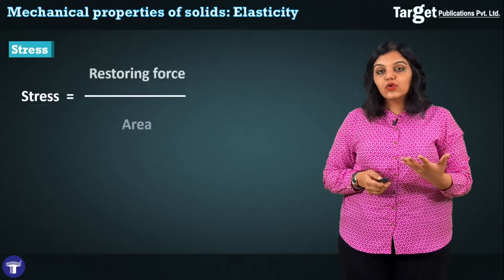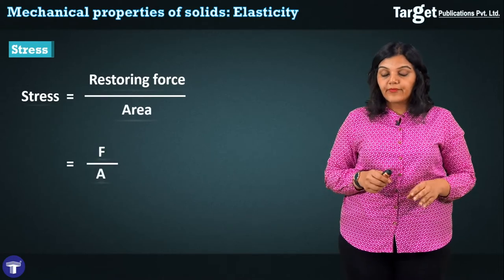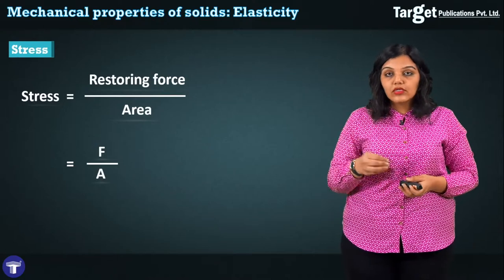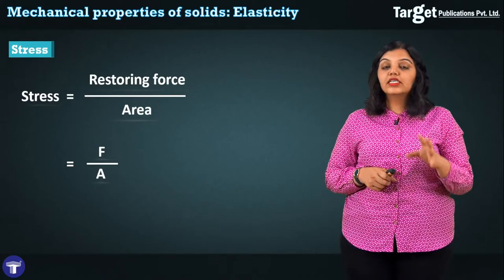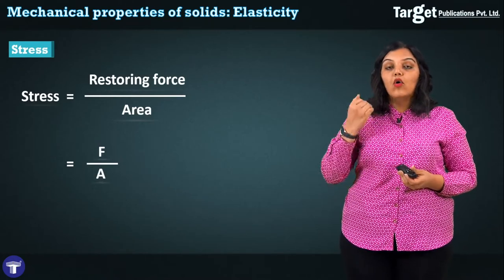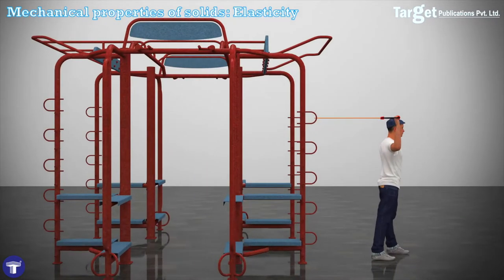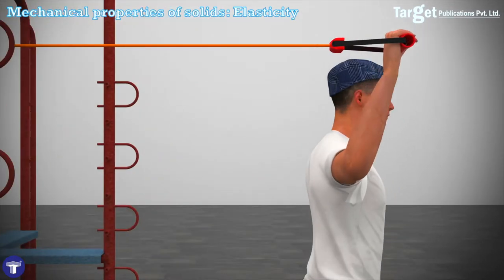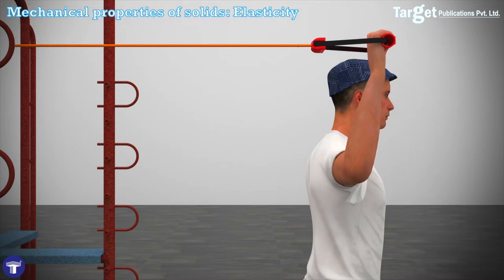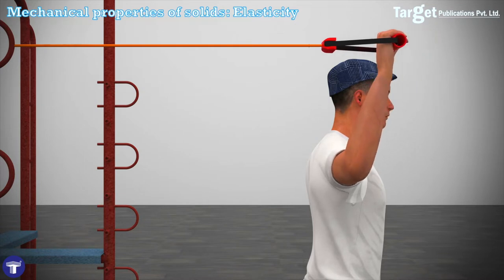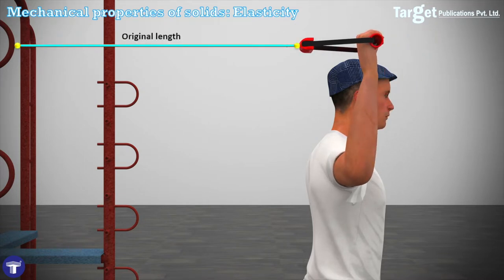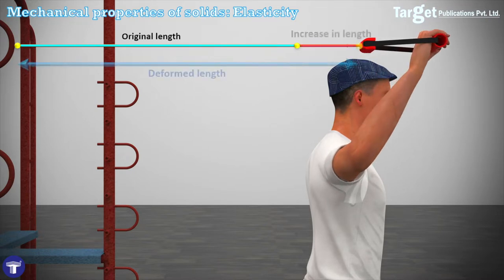Do not confuse stress with pressure — pressure is also force per unit area, but stress specifically refers to the internal restoring force set up in response to an external deforming force. Once a deforming force is applied, it may lead to a change in dimension of the body — this is deformation. For example, when a person exercises with an elastic cord, the cord increases in length. This deformation in the form of a change in dimension is what we call strain.